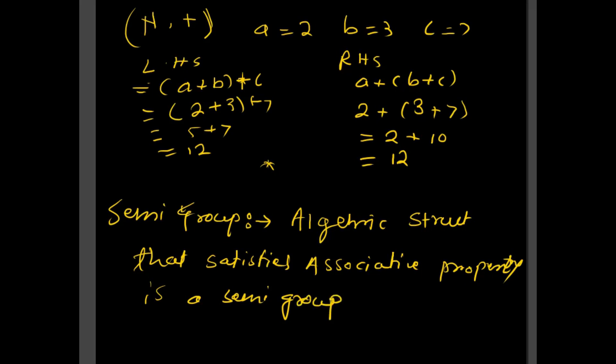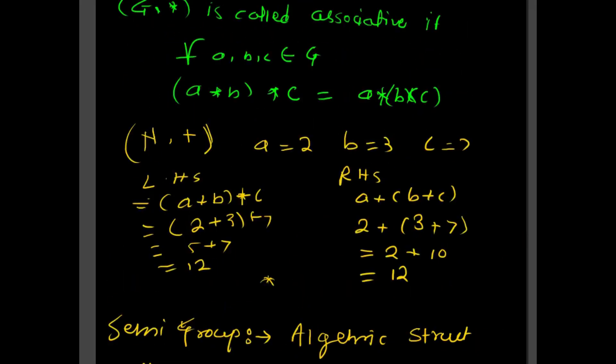You can take sets like natural numbers, integers, real numbers, rational numbers, or even numbers, and confirm that they satisfy the associative property. The associative property is satisfied when, for a, b, c belonging to a set, the operation (a * b) * c equals a * (b * c). You can replace the star with any operator — multiplication, division, addition, or subtraction — and confirm that LHS equals RHS.